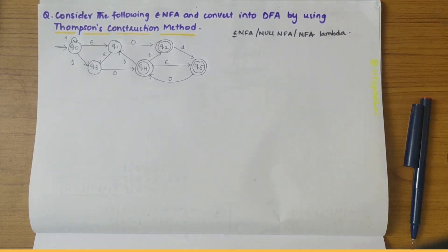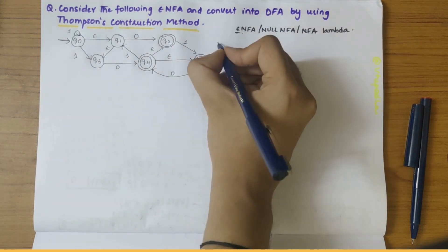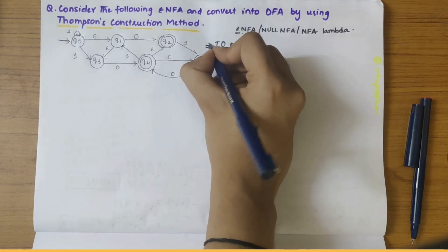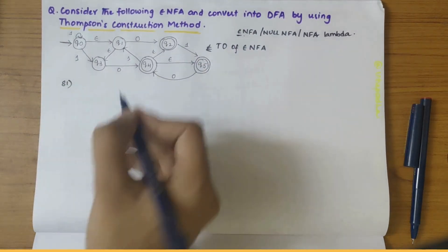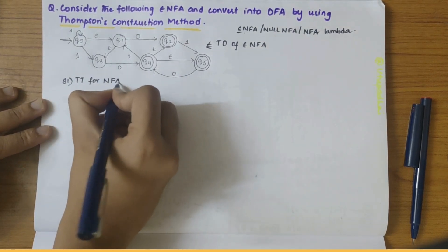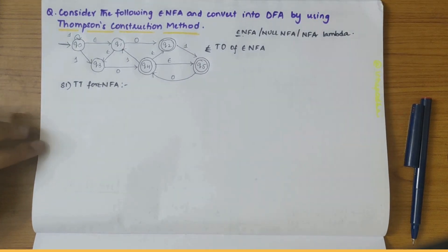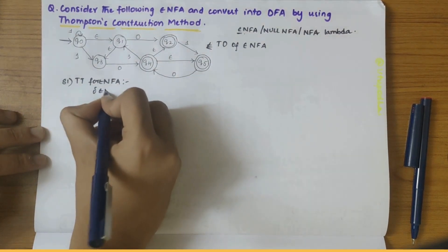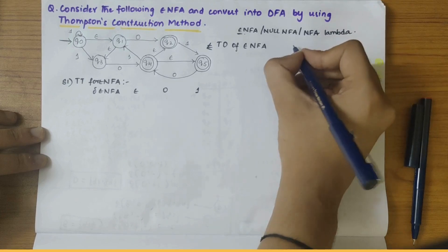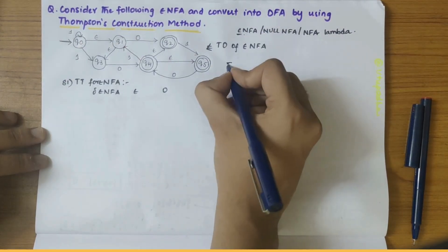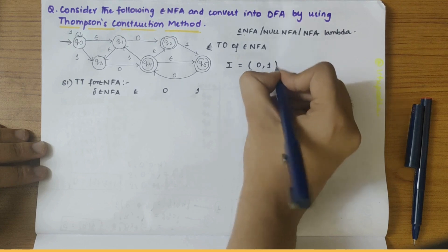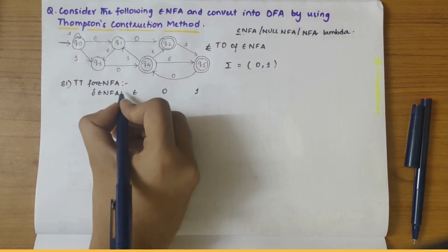Coming to the question, they have given us the transition diagram of epsilon-NFA. Our first step would be to draw the transition table for the epsilon-NFA. In this transition diagram, the sigma values comprise of zero and one, so let's draw the table.